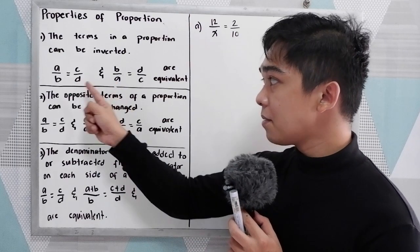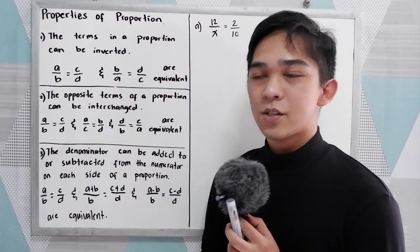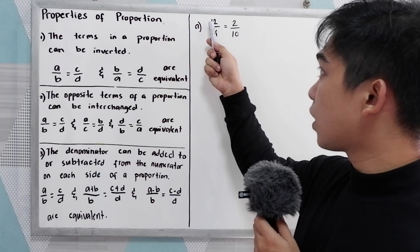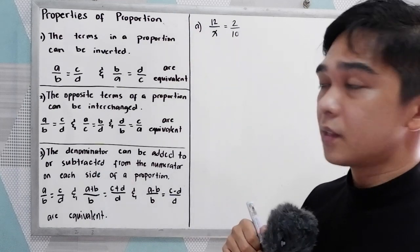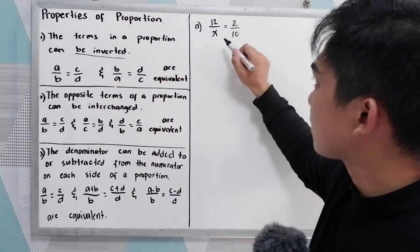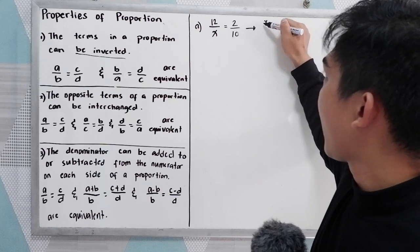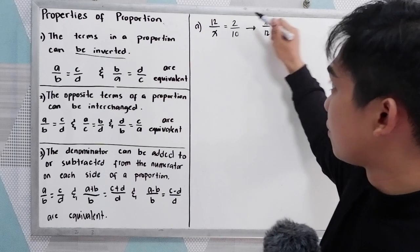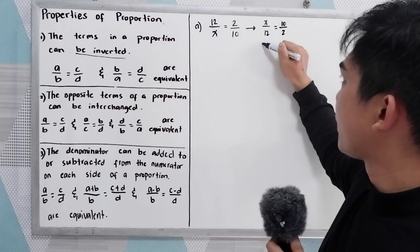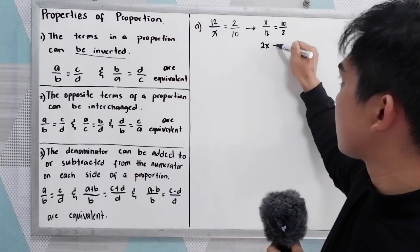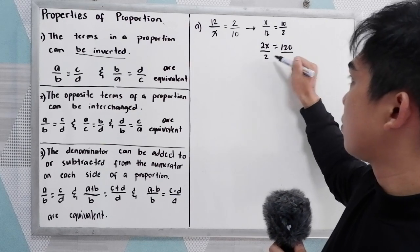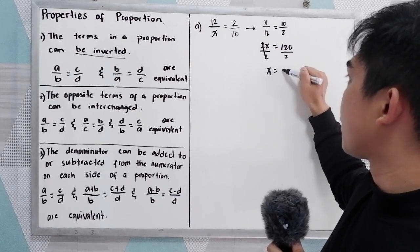Let us apply property number one. Given 12 over X equals 2 over 10, the terms can be inverted to get X over 12 equals 10 over 2. Cross-multiplying: 2 times X equals 2X, which is equal to 12 times 10, that is 120. Dividing by 2, X equals 60.